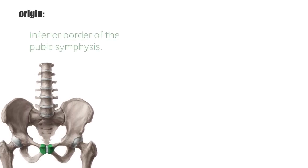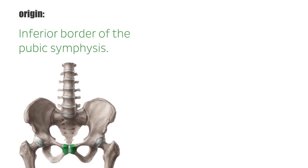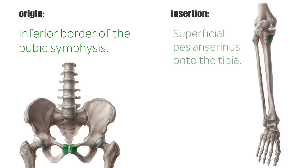The gracilis muscle runs from the inferior border of the pubic symphysis to the superficial pes anserinus onto the tibia. Its tendon is easy to palpate in the inguinal region, together with the tendon of the adductor longus muscle.